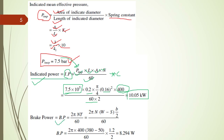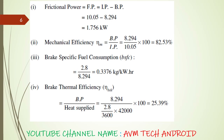Brake power is calculated as 2πNT divided by 60 — that is 2π times N times (tight side minus slack side) into brake drum radius B/2, divided by 60. All the data is available, so we calculate brake power as 8.294 kilowatt. Friction power is the difference between indicated power and brake power, giving 1.756 kilowatt. Mechanical efficiency is the ratio of brake power to indicated power multiplied by 100, giving 82.53%.